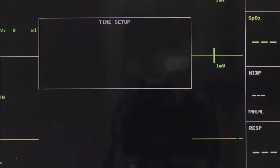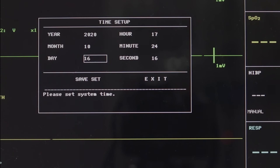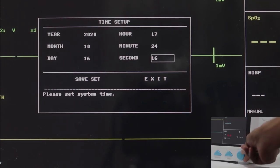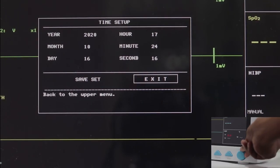Time Setup: System Time is in the format of year, month, day, hour, minute and second.